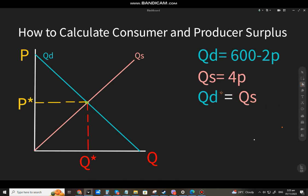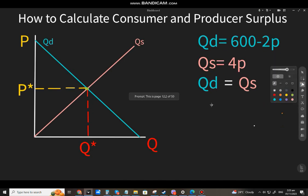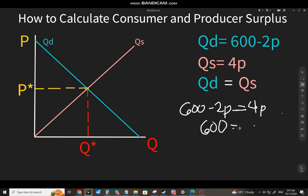Remember, to look at the market equilibrium, i-equal mo mo na itong dalawa. So, that will be 600 minus 2P equal to 4P. And, ito, algebra lang ito, 6P and P is equal to 100. So, alam natin, itong P star na ito, that will be 100.